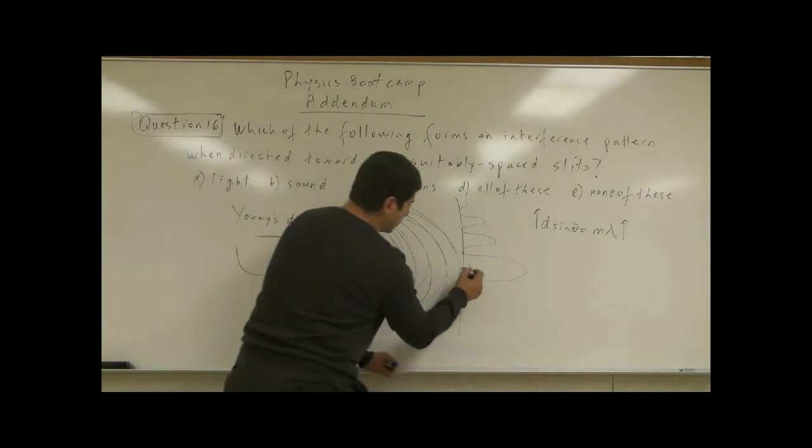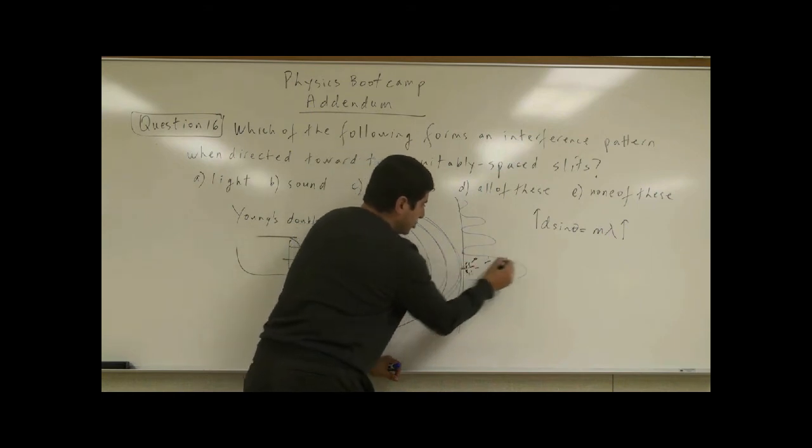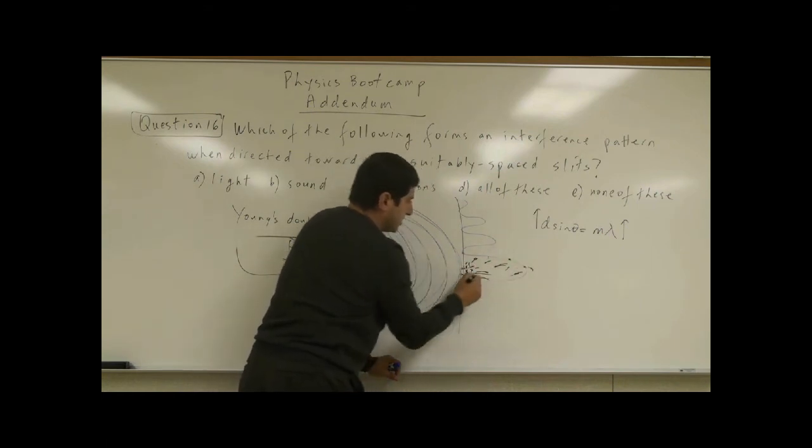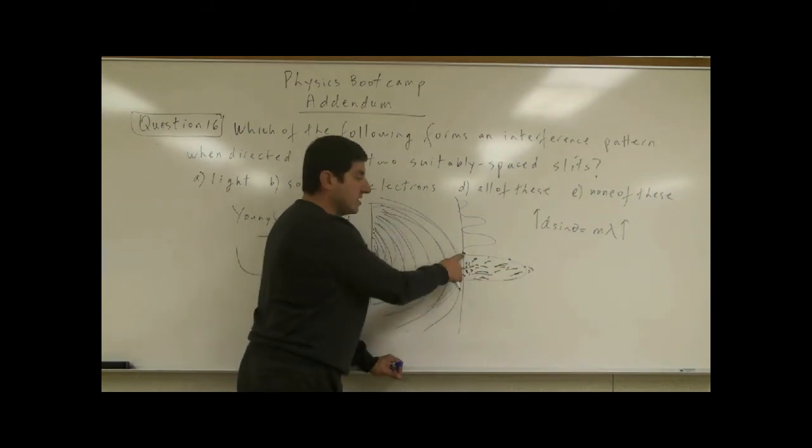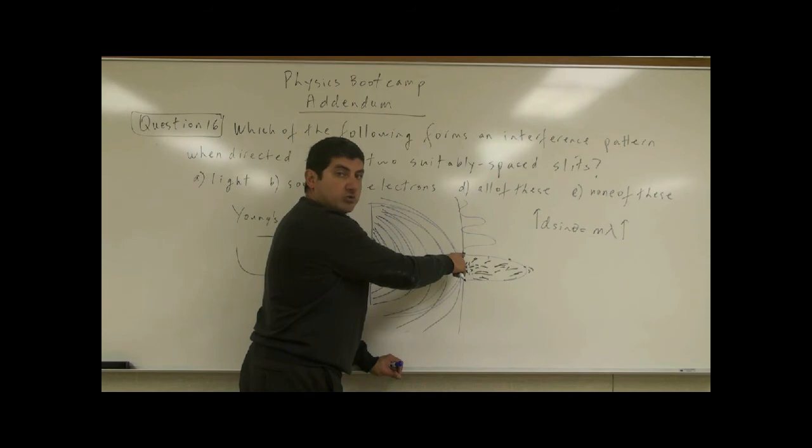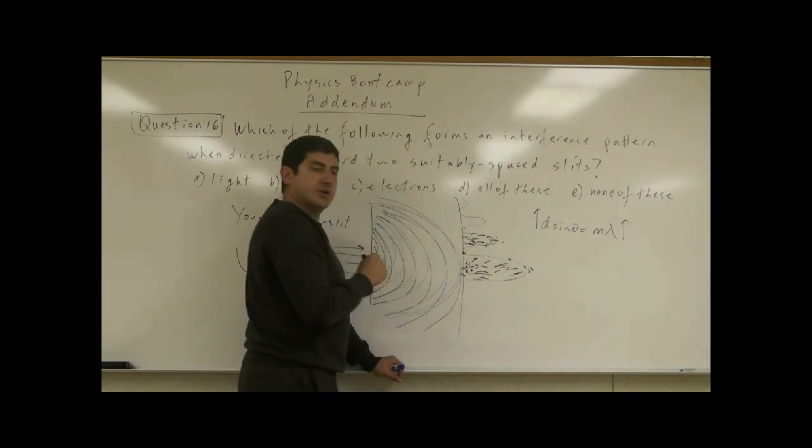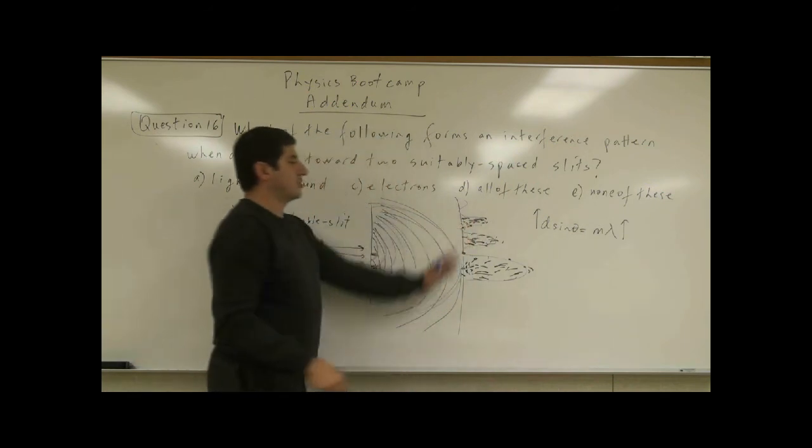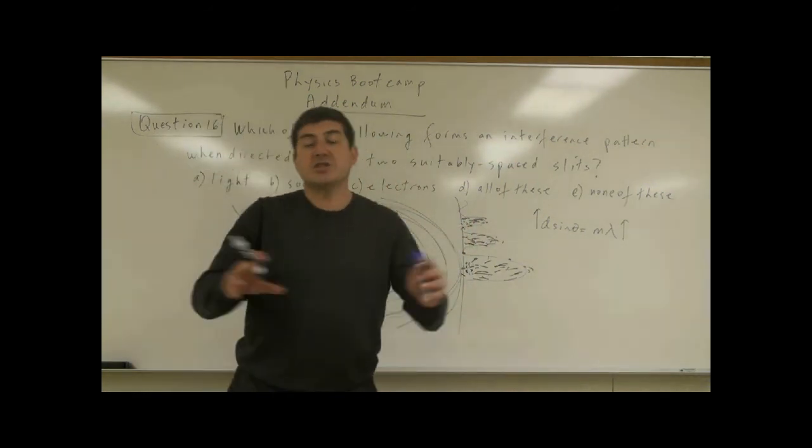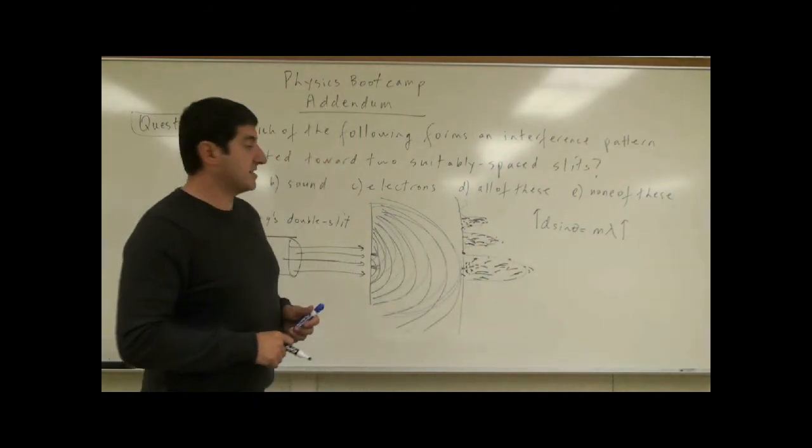Instead of a light wave being observed here, a bunch of electrons were observed in a central maximum. Then there was destructive interference with hardly any electrons there. Then you saw some electrons here, first order maximum, no electrons, then second order maximum, and so on. The same interference was observed with electrons as with light and sound.